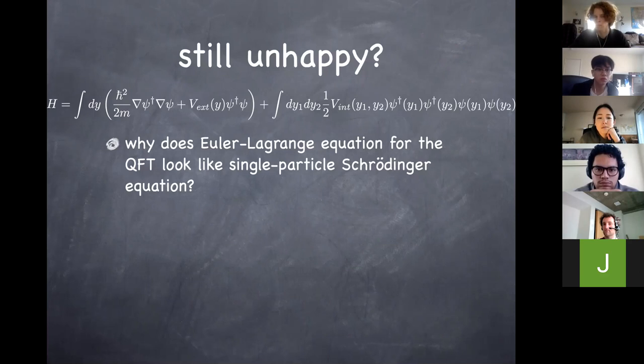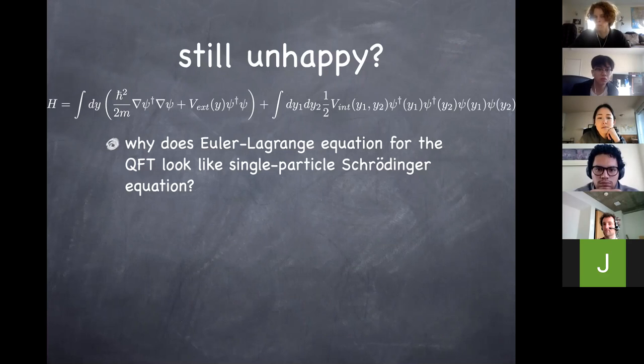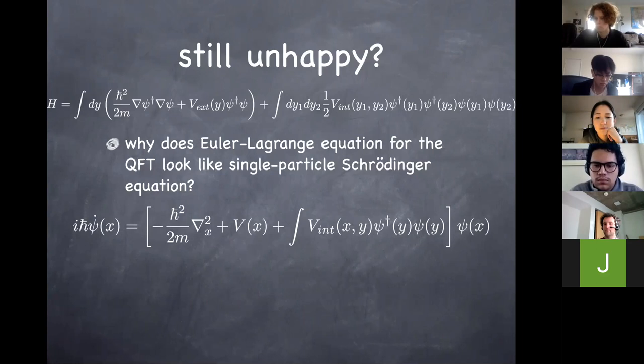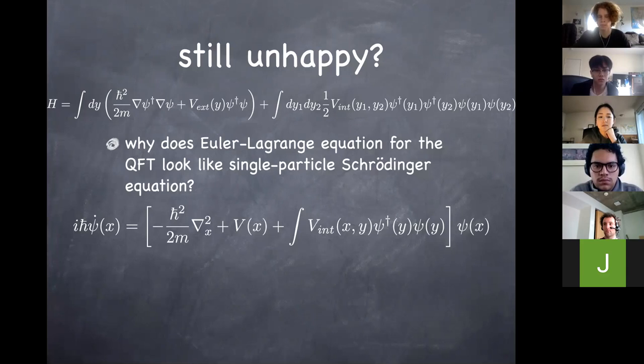Let me move on. There are two puzzles you might want to ask. First: why does the Euler-Lagrange equation for the QFT look like the single-particle Schrödinger equation? The resemblance is only a resemblance — the Euler-Lagrange equation is non-linear in the presence of self-interaction, which clearly isn't the Schrödinger equation. But at least the first two terms look like the Schrödinger equation for a single particle. Where does this resemblance come from?